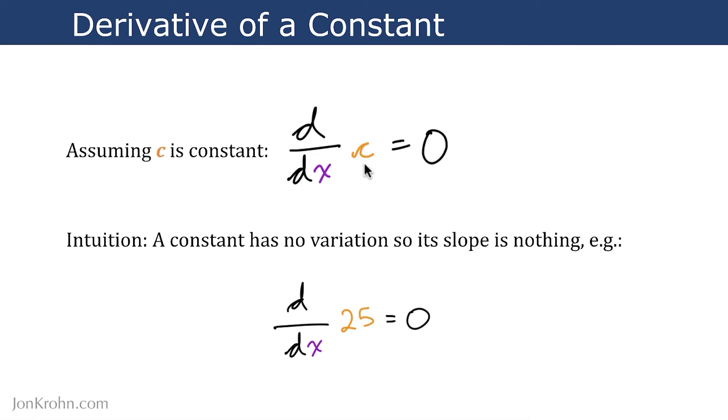So for example, if our constant is the number 25, if we take the derivative of the number 25, it has to come out to zero.